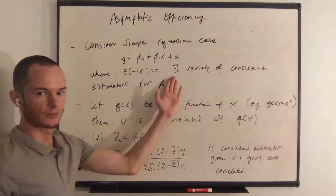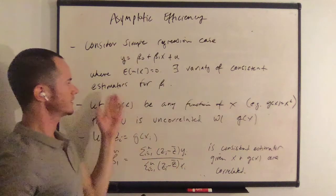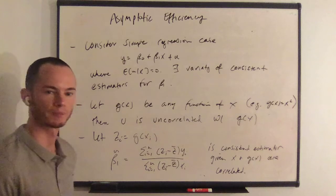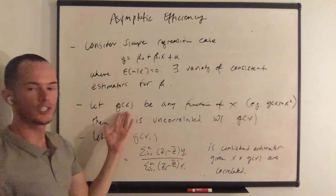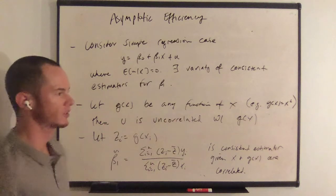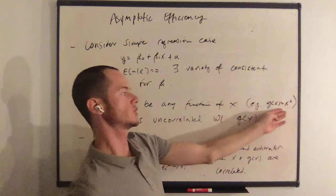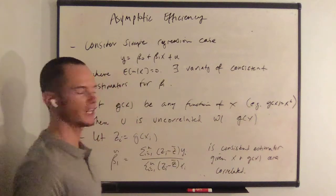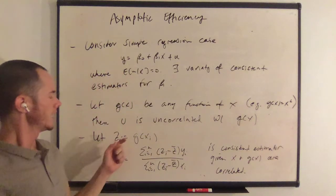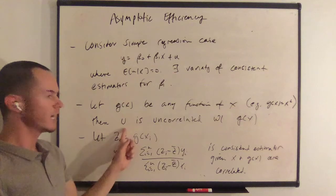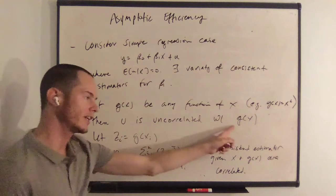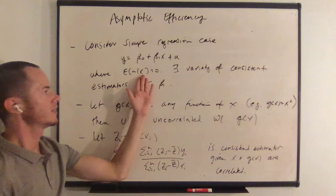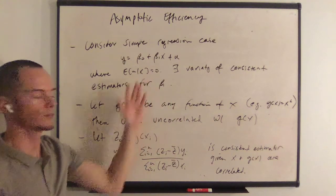There exists a variety of consistent estimators for beta 1. Let g of x be any function of x, for example, g of x equals x squared, any function of x. Then the error is uncorrelated with g of x by virtue of our zero conditional mean assumption.